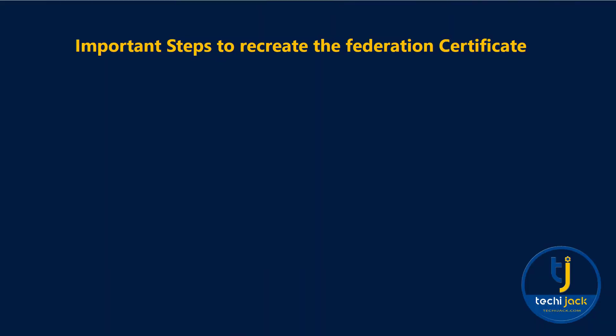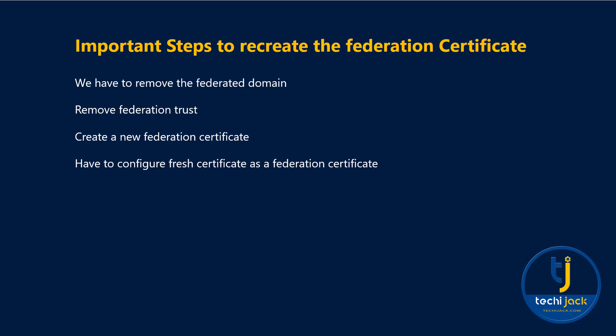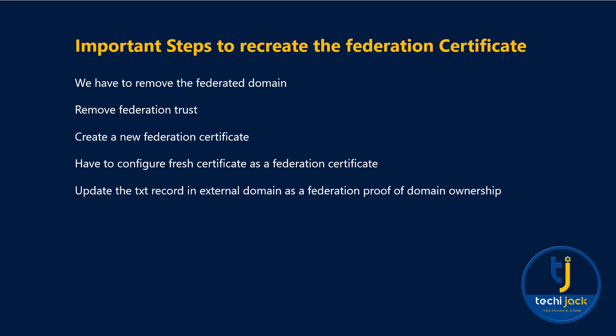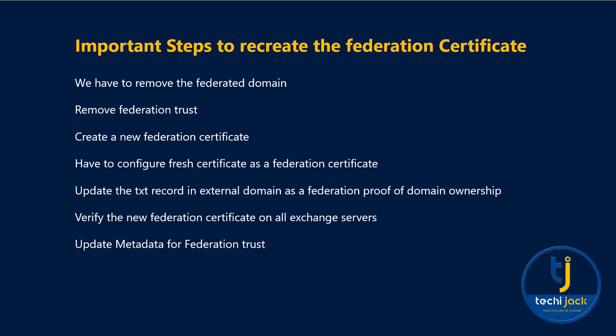Let's go through the important steps to renew and replace the federation certificate in Exchange. We have to remove the federated domain first, then remove the federation trust, create a new federation certificate, configure it as the federation certificate, update the TXT record in our external domain as federation proof of domain ownership, verify the new federation certificate on all Exchange servers, update the metadata for federation trust, and finally add the federated domain. I am not recording this video on a real server because this fix was done on a client's server remotely to secure privacy, but you can still follow along using the screenshots I will share.